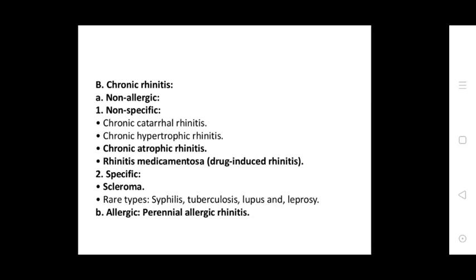Chronic rhinitis subtypes include: chronic catarrhal rhinitis, chronic hypertrophic rhinitis, chronic atrophic rhinitis, rhinitis medicamentosa, and drug-induced rhinitis. Specific types include: scleroma, rare types such as syphilis, tuberculosis, leprosy, and perennial allergic rhinitis.